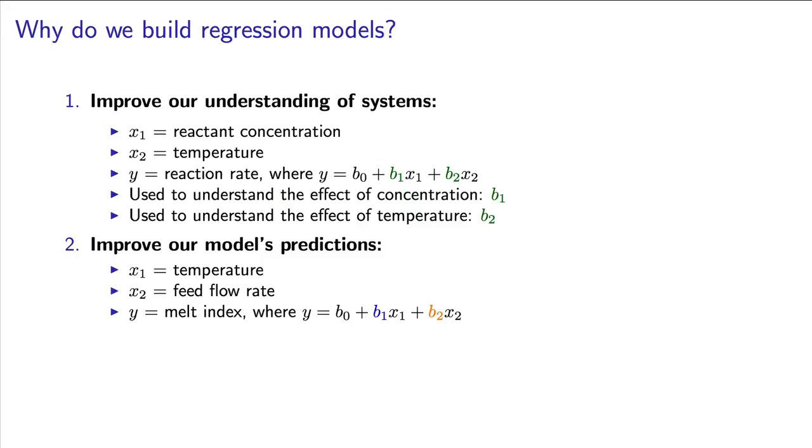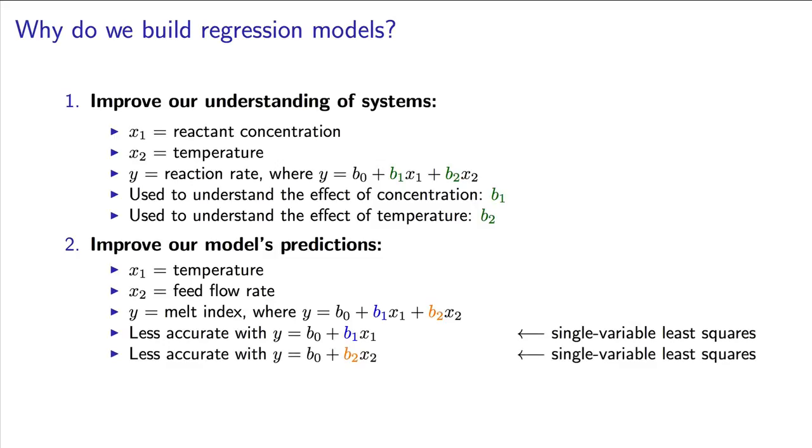But ultimately, we're more interested in the predictions of melt index that we get from this model. The predictions from just using temperature to predict melt index, or just using the feed flow rate to predict melt index would be poor. But when we combine both variables, the multiple regression model should give us better predictions overall.